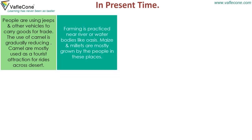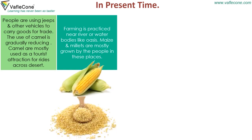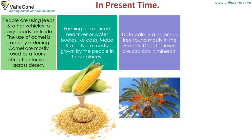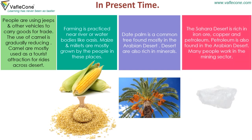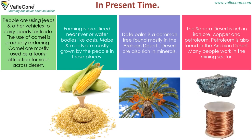Farming is practiced near rivers or water bodies like oases. Maize and millet are mostly grown by the people in these places. Date palm is a common tree found mostly in the Arabian desert. Deserts are also rich in minerals. The Sahara desert is rich in iron ore, copper and petroleum. Petroleum is also found in the Arabian desert. Many people work in the mining sector.